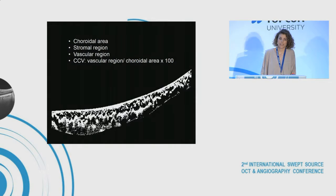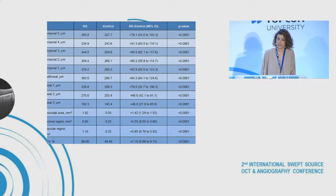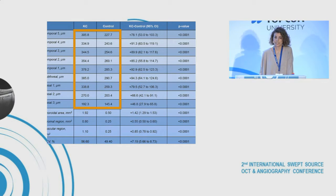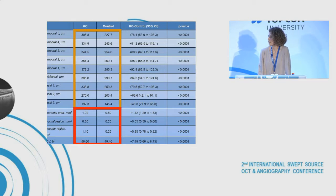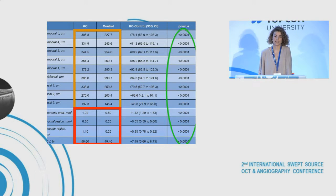We were able to analyze all these parameters, and this table summarizes our results. As you can see, keratoconus patients had a thicker choroid than control patients. The choroidal, stromal, and vascular regions were increased in keratoconus patients, as was the vascularity index. All this data was statistically significant.